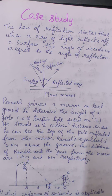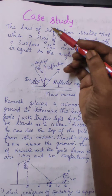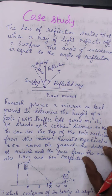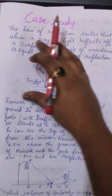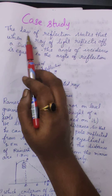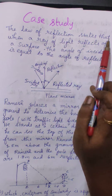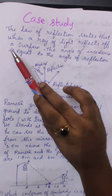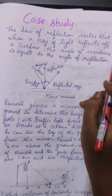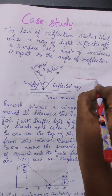Hello students. Now we will discuss one case study problem. Before learning and knowing the situation of the case study, we will have a glance at the given hint. Here they have given: the law of reflection states that when a ray of light reflects off a surface, the angle of incidence is equal to the angle of reflection.